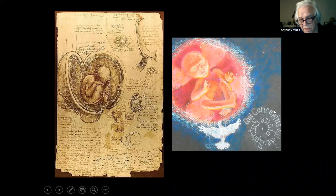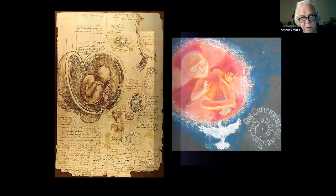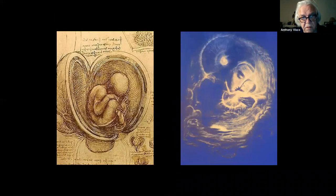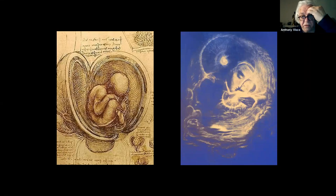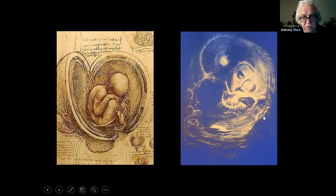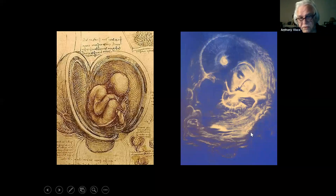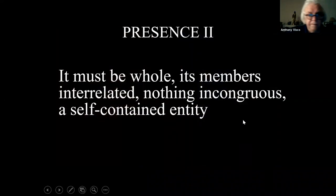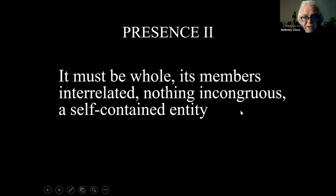Da Vinci makes the center of the circle the navel, which is our point of conception — where we grow in the womb. He makes the root of the genitals the center of the square, which is the temporal. So we have the temporal and the eternal overlapped, two different centers. To me this is a map of heaven on earth, or the overlapping of both. His interest in the idea of conception is in so many of his drawings.